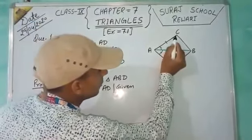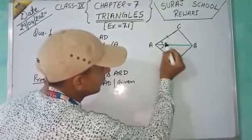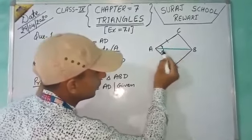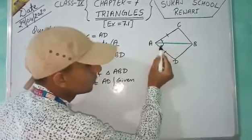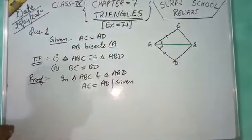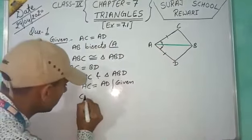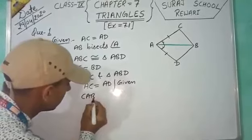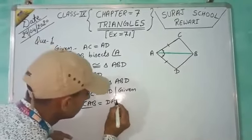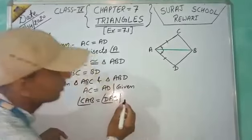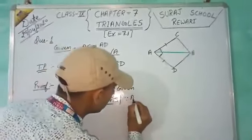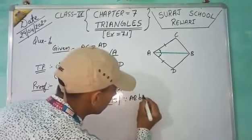Second, angle CAB will be equal to angle DAB. Because AB is the bisector of angle A. Hence, angle CAB is equal to angle DAB. Reason: AB bisects angle A.